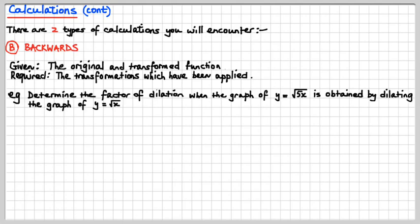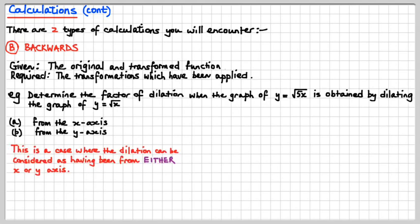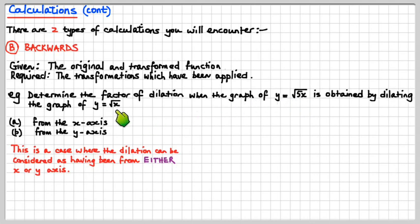Determine the factor of dilation when the graph of y = √(5x) is obtained by dilating the graph of y = √x. Now, this is a case where the dilation can be considered as having come from either the x-axis or the y-axis. Remember, different mappings — one horizontal, one vertical — can get to the same result. This is exactly that scenario.